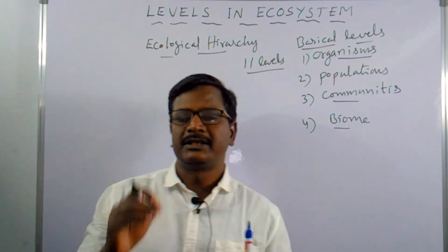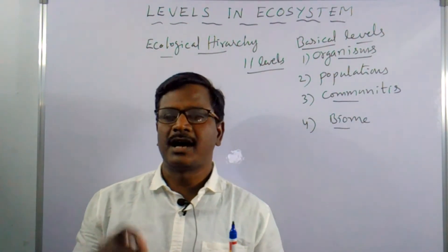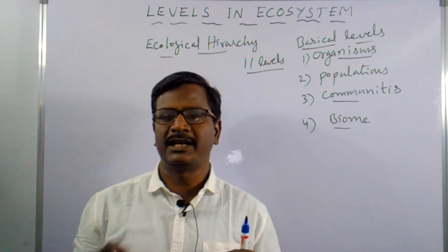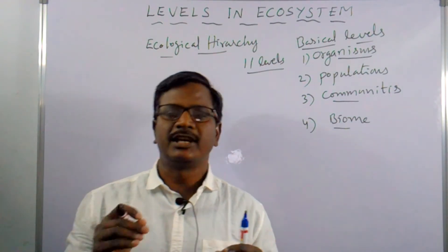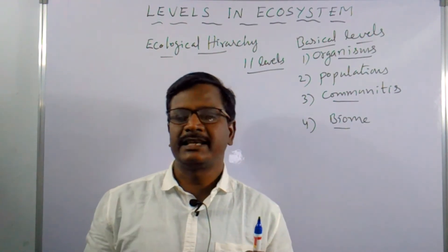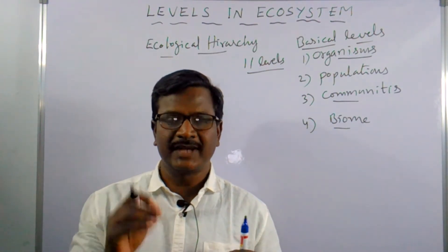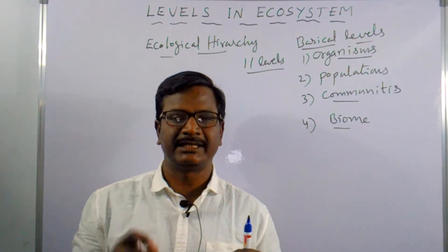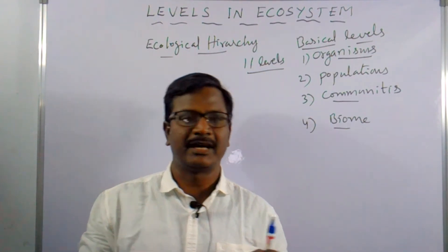The 11 levels are: cell, tissues, organ, organ system, organism, population, community, ecosystem, landscape, biome, and ecosphere. These are the 11 levels present in the ecological hierarchy.